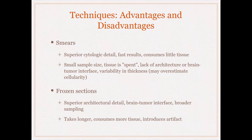For intraoperative assessment of a brain tumor, you essentially have two tools: smears and frozen sections. Some places do smears only, others do frozen sections only, but most neuropathologists use a combination of both. The principal advantage of smears is vastly superior cytologic detail — they're fast and consume very little tissue. The disadvantage is small sample size, sampling issues, and once smeared the tissue is essentially spent, so you can't do IHC or molecular studies.